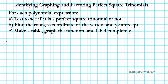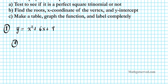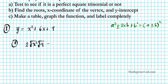For problem number one we have the polynomial function y equals x squared plus 6x plus 9. The question is, is this a perfect square trinomial? We know that the perfect square trinomial is of the form a squared plus or minus 2ab plus b squared, and that factors into the quantity (a plus or minus b) squared. To determine it, we ask: is 2 times the square root of the first term times the square root of the last term equal to the middle term? If this is true, then it is a perfect square trinomial.